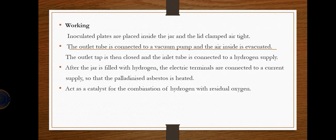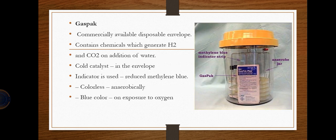In the McIntosh-Fildes jar, inoculated plates are placed inside and the lid is clamped airtight. A vacuum pump evacuates the air, the outlet is closed, and hydrogen gas is connected via the inlet. Electric terminals heat the palladium catalyst, which combines residual hydrogen with residual oxygen to remove it. A GasPak is an alternative — a disposable envelope containing chemicals that generate H₂ and CO₂ when water is added, with a gold catalyst inside the envelope.